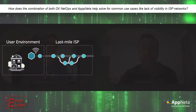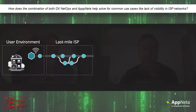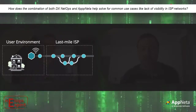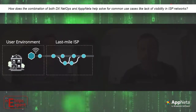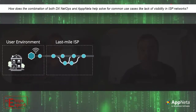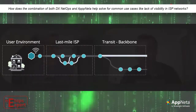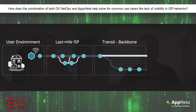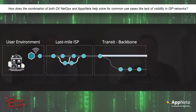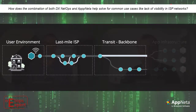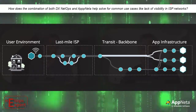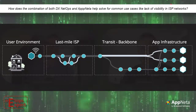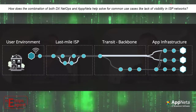Then you have last mile ISPs basically right outside their door. Who are they contracting with, and are they performing up to whatever standard they need to? Then you've got transit networks — everything between that last mile ISP and wherever the app is hosted. That can be an app hosting environment, cloud, data center, or a headquarters.